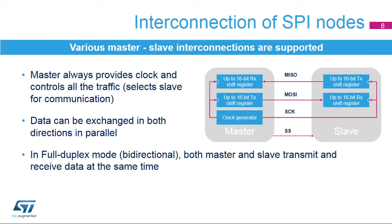The SPI master always controls the bus traffic and provides the clock signal to the dedicated slave through the SCK line. The master can select the slave it wants to communicate with through the optional slave select, or NSS, signal. Data stored in the dedicated shift registers can be exchanged synchronously between the master and slave through the MOSI — master output, slave input — and the MISO — master input, slave output — data lines.